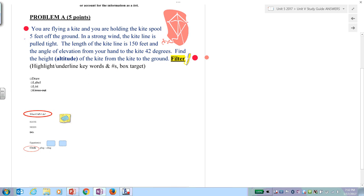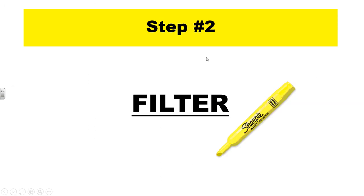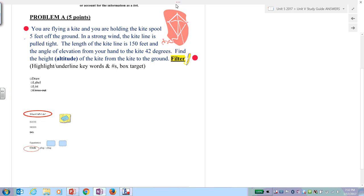Step two: you filter. Go back and highlight or underline all of the numbers and keywords. We're flying a kite, and the kite spool is 5 feet off the ground. In a strong wind, the kite line is tight — the kite line is 150 feet. You have an angle of elevation from the hand to the kite at 42 degrees.